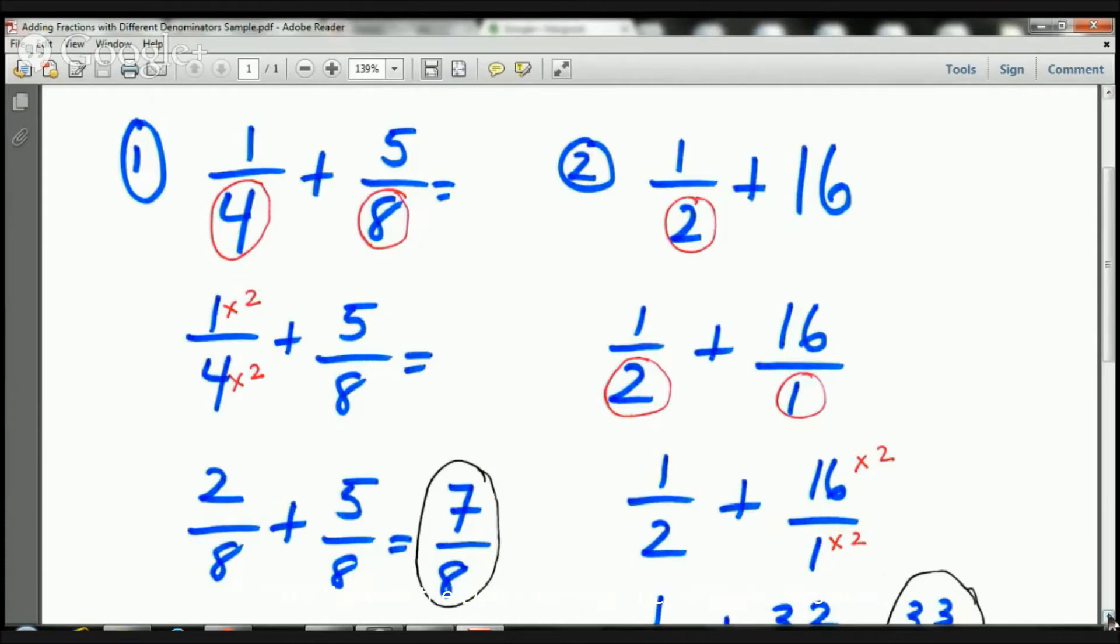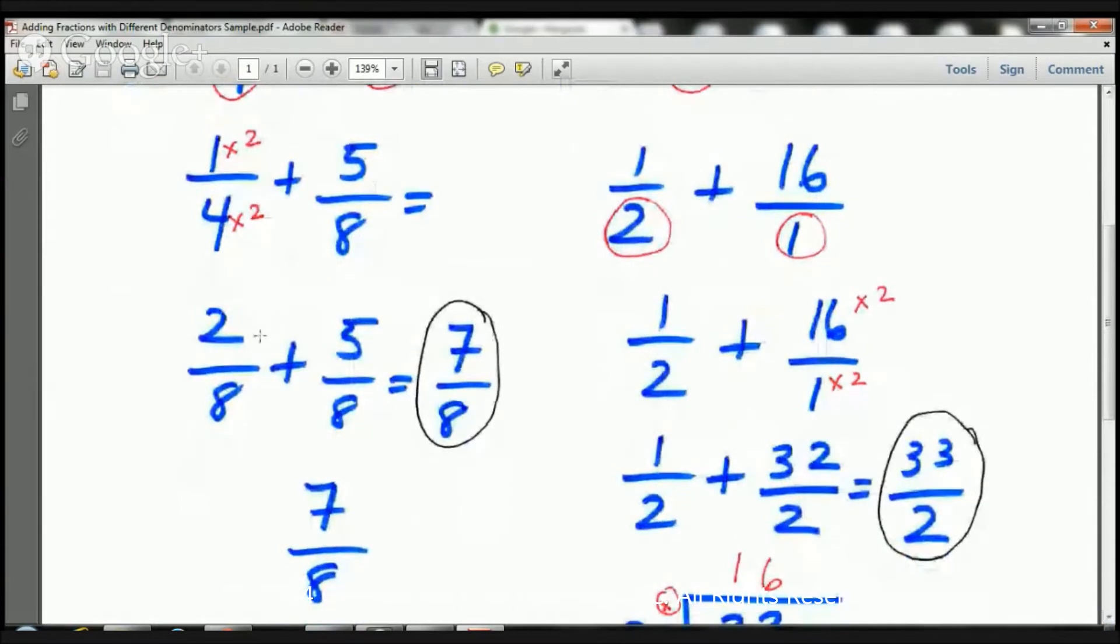Over here, we have 2/8 because 1 times 2 is 2, and 4 times 2 is 8. So, now I have 2/8. And I just bring down the 5/8. Now, I'm a happy camper. I feel great because I've got the same denominator. Now, I can just add straight across. 2 plus 5 is 7, and then we have our denominator of 8.